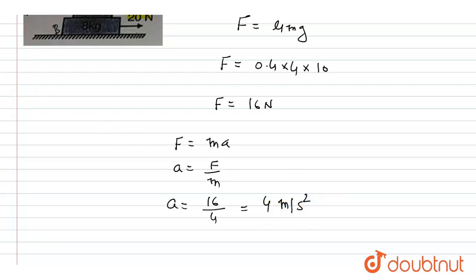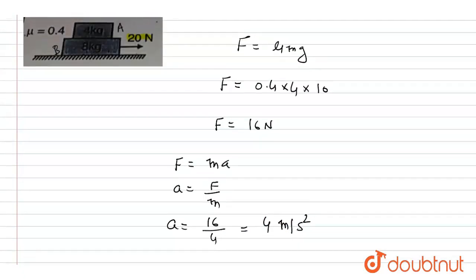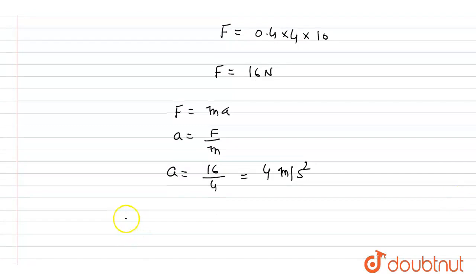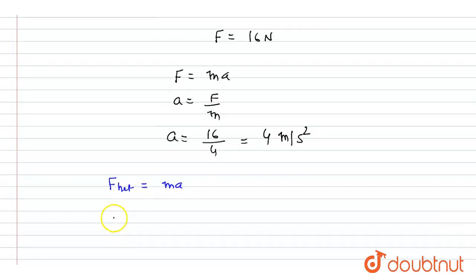Now let's say both blocks are moving together. Both blocks are moving together. From here, the value of F net is equal to ma. Both blocks are moving together, so the force is 20 newton and the mass is 4 plus 8.